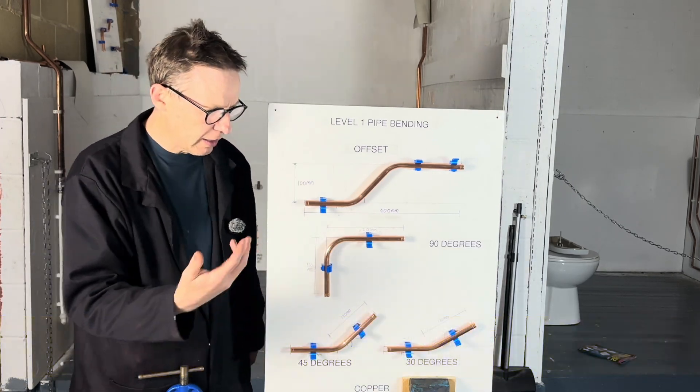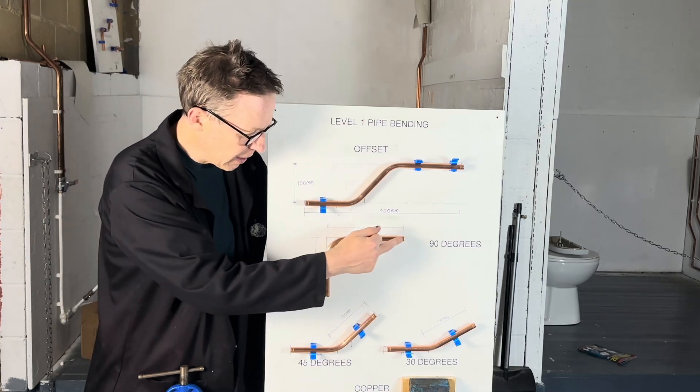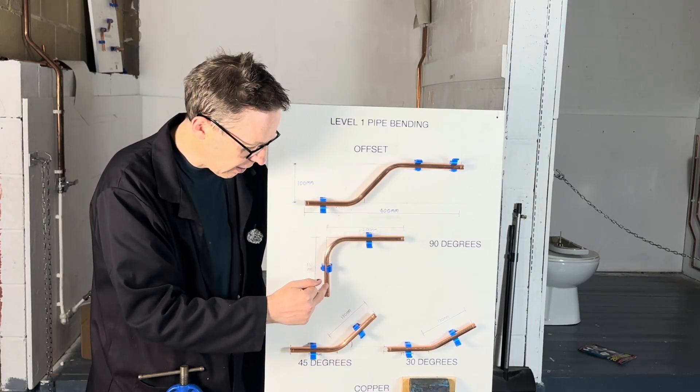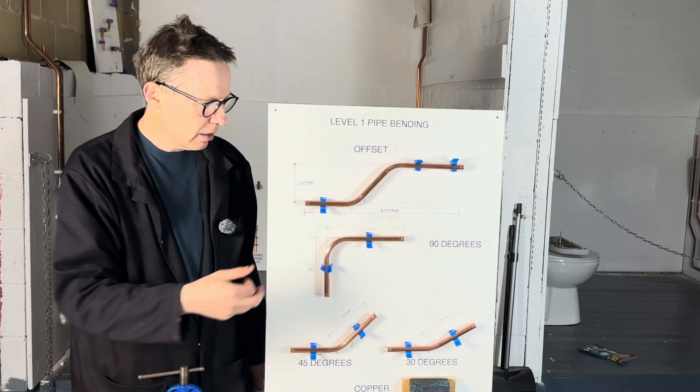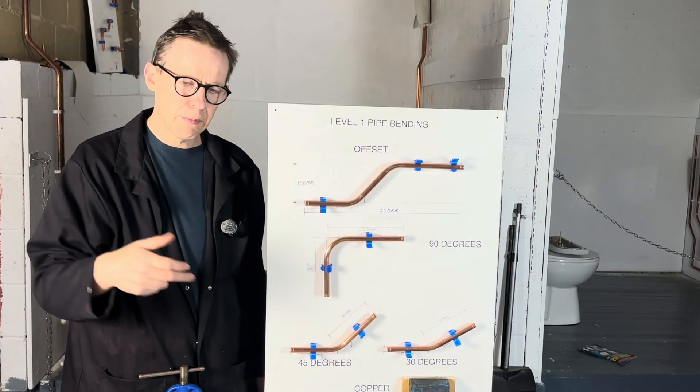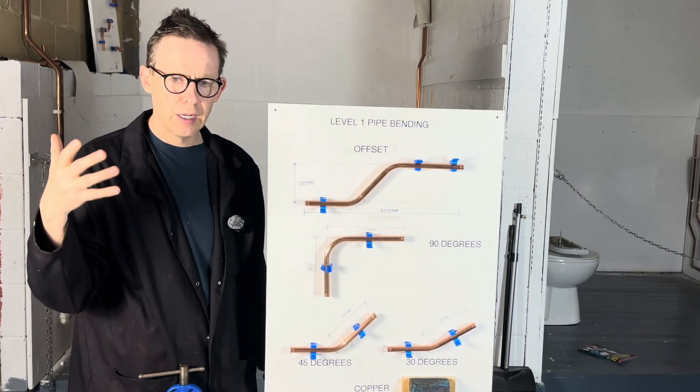With regard to pipe bending, I would say the most popular bend you would do is 90 degrees and second most popular bend will be an offset. So pay attention and I will show you how to do it.